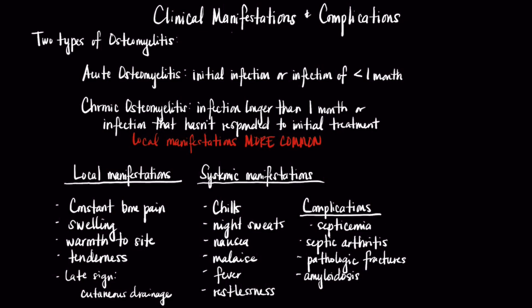Local manifestations tend to be more common in chronic osteomyelitis, with systemic manifestations diminished. Some complications of osteomyelitis include septicemia and septic arthritis. Pathologic fractures can also occur due to the eventual malformation of bone as a result of infection. Amyloidosis, which is the development of abnormal proteins, can also occur with chronic osteomyelitis and can eventually be life-threatening.